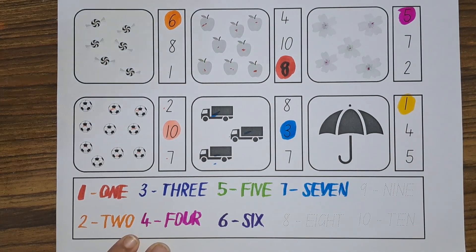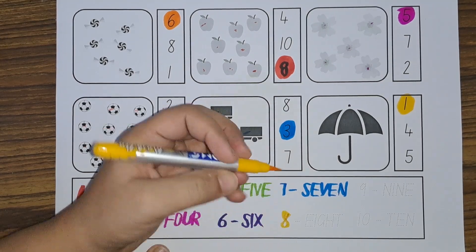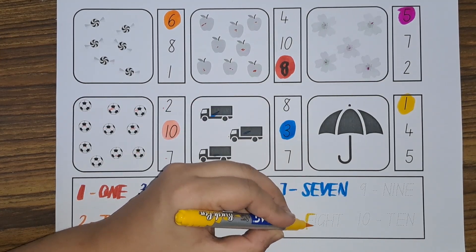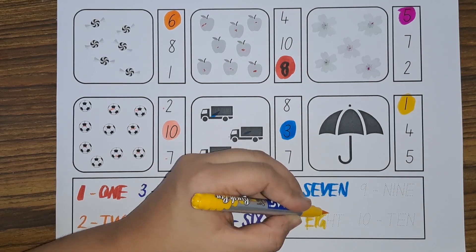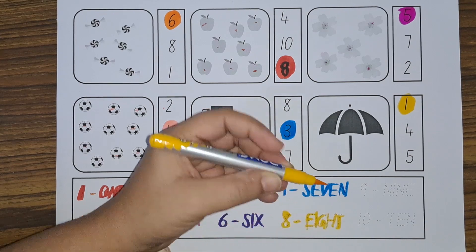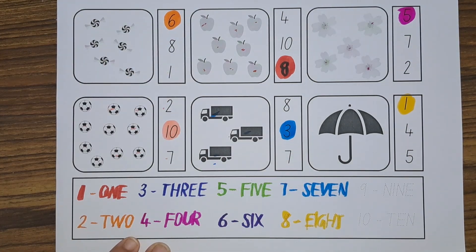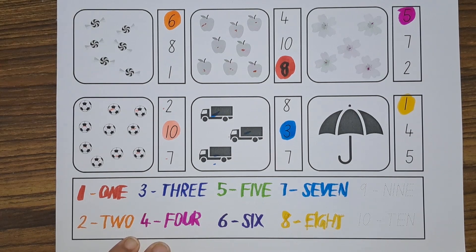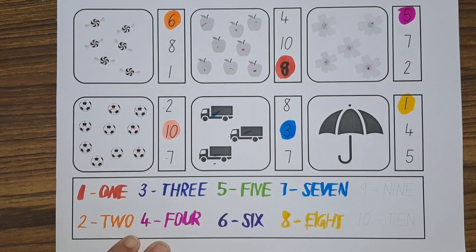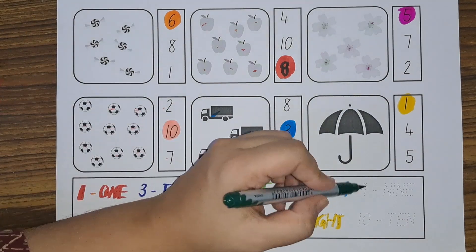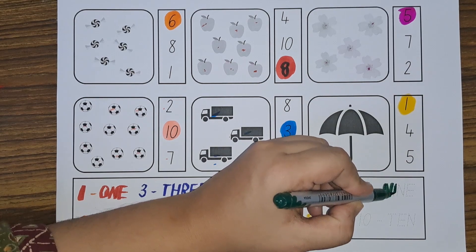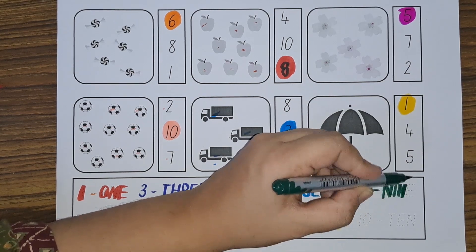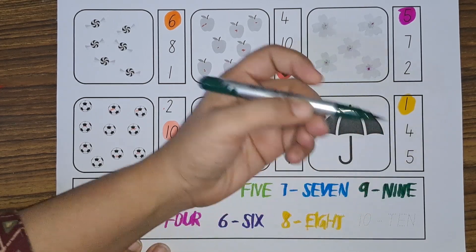Then we have eight: E-I-G-H-T. Then we have nine: N-I-N-E.